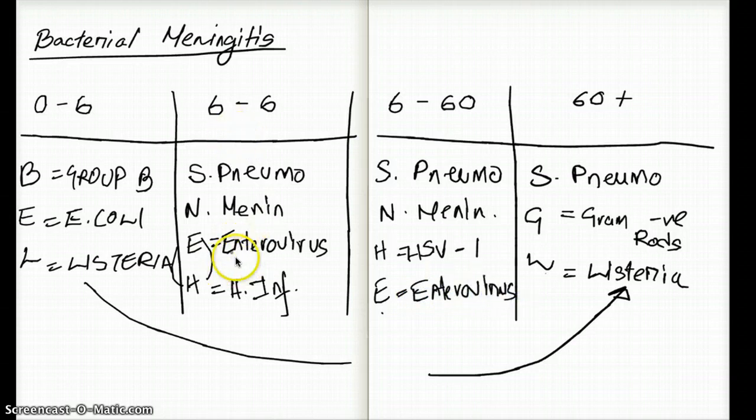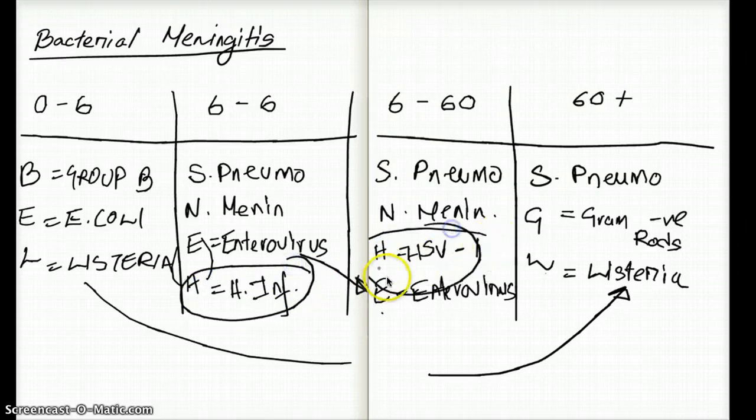This H is going to be HSV-1, and this E is going to be Enterovirus. This is just switched from 0 to 6 months. Enterovirus came before, now Enterovirus is going to come here, and H is going to go above. But this is not the same H - this is Haemophilus Influenzae, and here it's HSV-1.